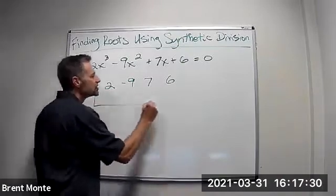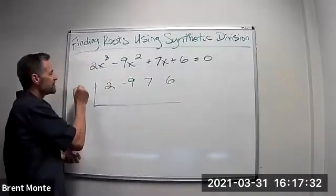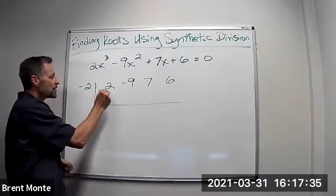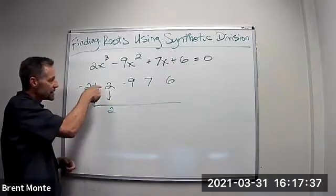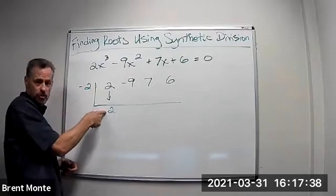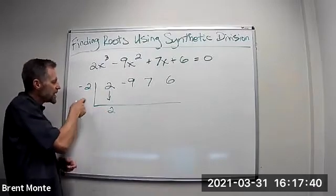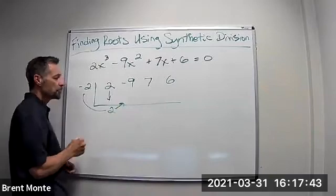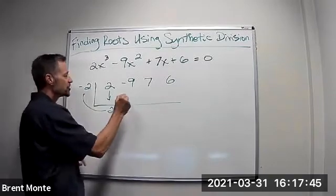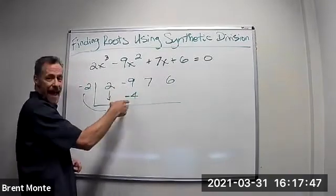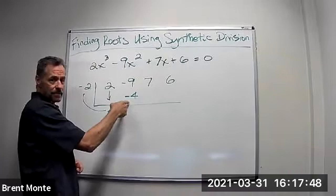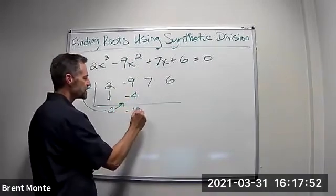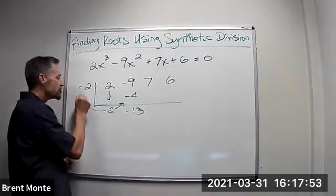And let's check one of these. Suppose we're checking to see if negative 2 is a root. The way synthetic works, you bring the 2 straight down and you do negative 2 times 2. So whatever this number is, you multiply there. Negative 2 times 2 is negative 4. And then you add these down. Negative 9 plus negative 4 is negative 13.